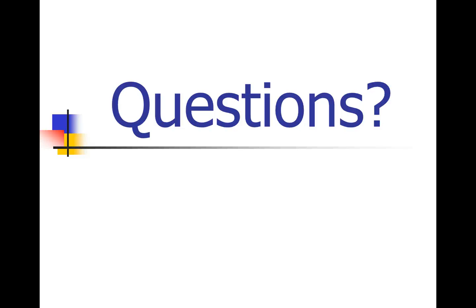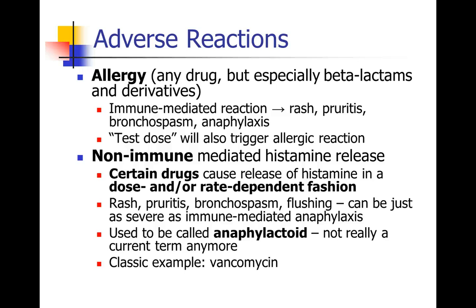Now we'll move on to a discussion about adverse reactions. The most common adverse reaction people think of is allergy. People can be allergic to any drug and any antibiotic; beta-lactams especially have a reputation for precipitating allergic reactions. An allergy is usually an immune-mediated reaction, meaning only a little bit needs to be exposed to the body, the immune system kicks in and triggers a snowball effect, leading to anything from rash and itching all the way to bronchospasm and anaphylaxis. Even a tiny test dose can trigger an allergic reaction.